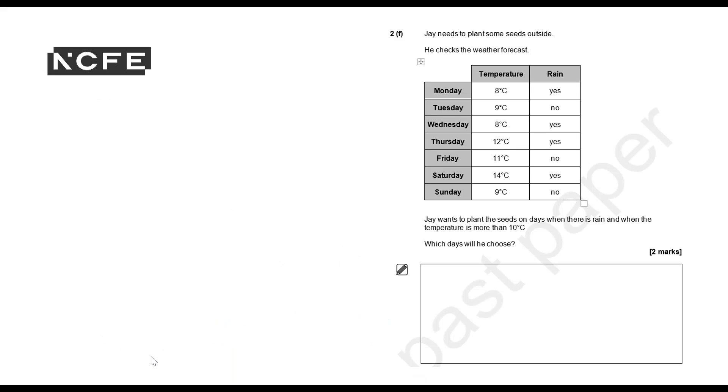Question 2F: Jay needs to plant some seeds outside. He checks the weather forecast. Jay wants to plant the seeds on days when there is rain and when the temperature is more than 10 degrees Celsius. Which days will he choose? So here's our learner's answer. You can pause now to decide how many marks.